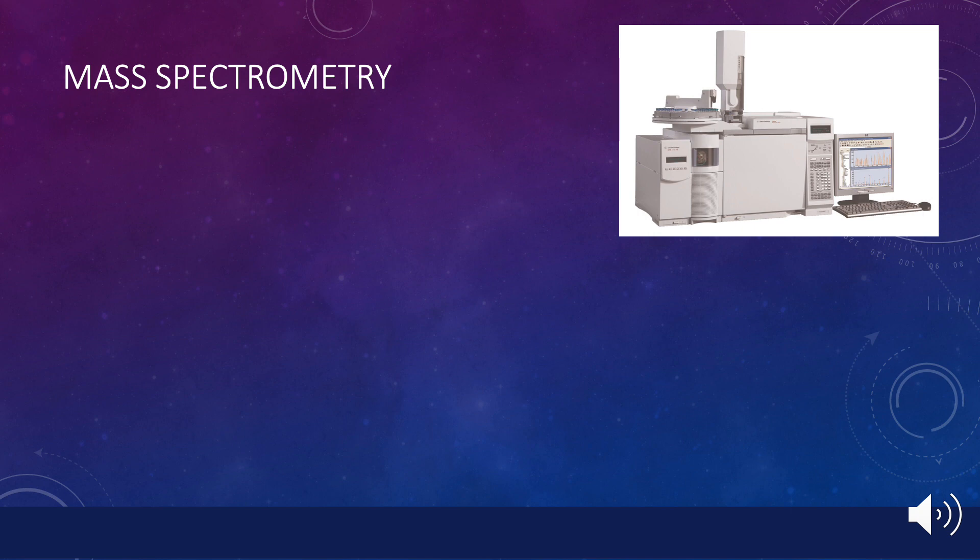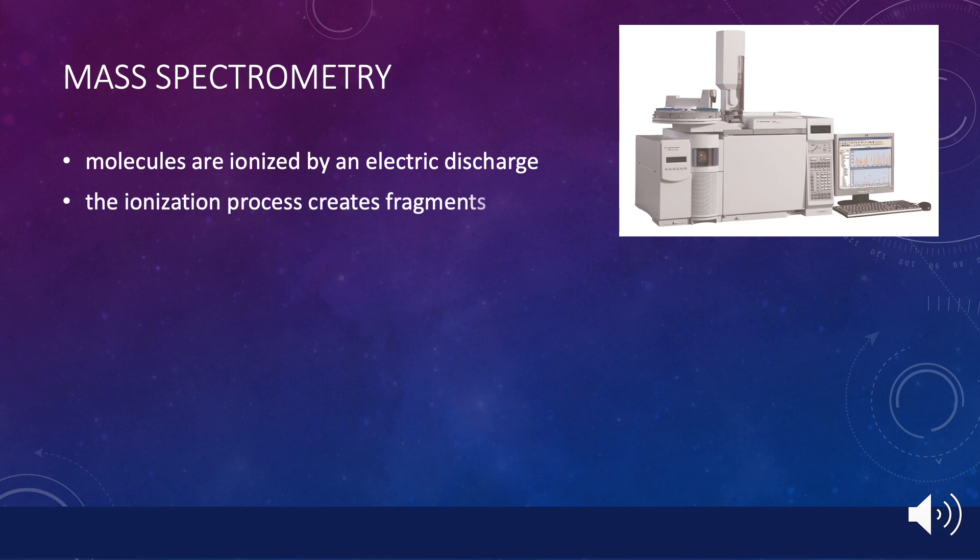The inner workings of a mass spectrometer are described in the handout provided in this exercise. The main features include the following. When a sample enters the mass spectrometer, it is bombarded with an electric discharge that serves to knock an electron off each of its molecules, creating positive ions. This process is very violent, adding lots of energy to the molecule, and this can cause it to break into fragments.